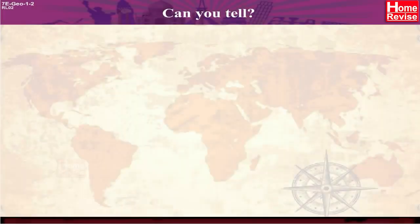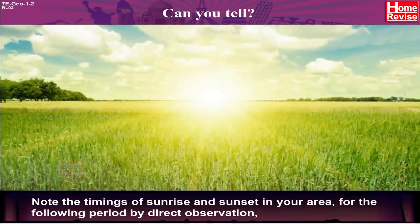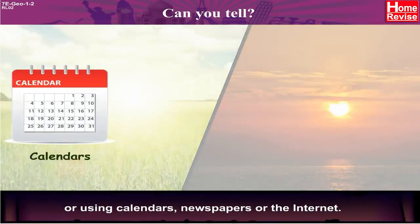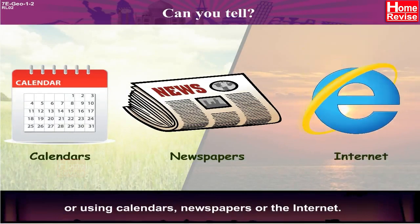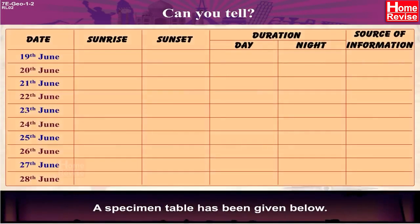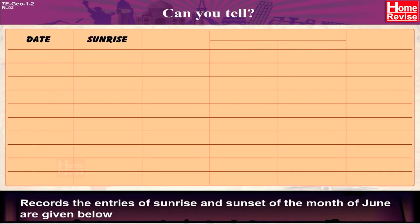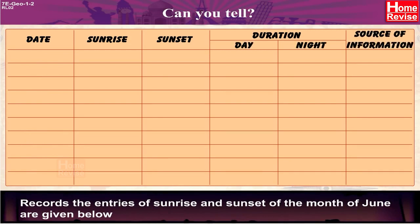Note the timings of sunrise and sunset in your area for the following period by direct observation, or by using calendars, newspapers, or the internet. A specimen table has been given below. Records of the entries of sunrise and sunset for the month of June are given below, with columns for date, sunrise, sunset, duration of day, night, and source of information.